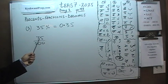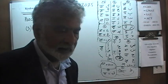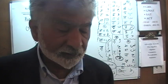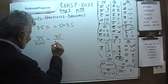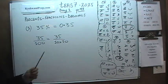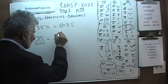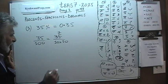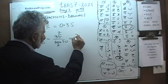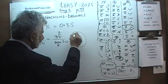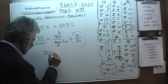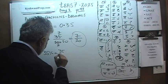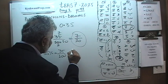Now as a fraction: 35 percent means 35 out of 100. We have it in fraction form already, but if it can be reduced, we must reduce it. I'll write 100 as 10 times 10. We divide top and bottom by 5: 35 is made up of seven fives, and 10 is made up of two fives, giving 2 times 10, which is 20. So it reduces to 7 over 20. When represented as a fraction in reduced form, 35 percent is 7 over 20.